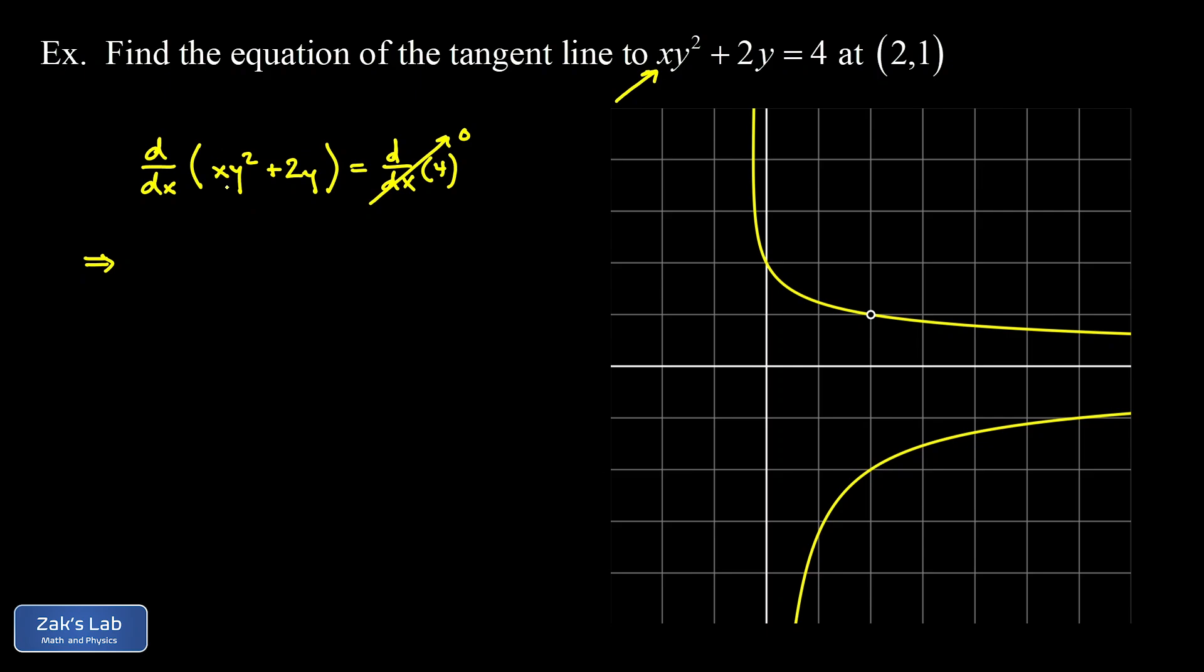So when I apply the derivative to this first term I actually have a product of two functions that depend on x. One of them is x, the other one is y². So we have to use the product rule here.